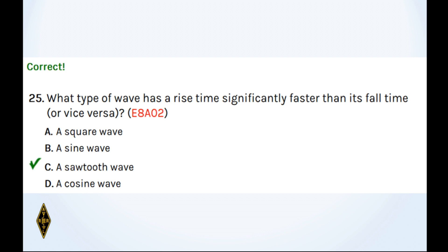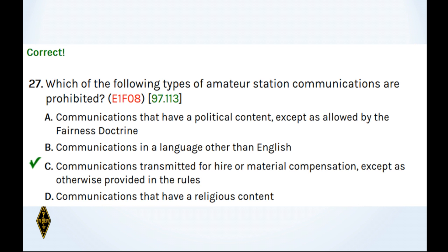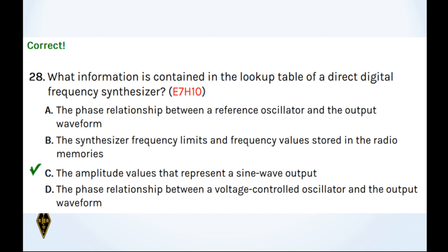And 26, what is the main reason to use a charge controller with solar? Well, it's to prevent the battery from being damaged due to overcharging. And 27, what of the following types of amateur station communications are prohibited? Pecuniary, communications transmitted for hire or material compensation. You can have no pecuniary interest, monetary interest. 28, what information is contained in the lookup table of a DDS or direct digital synthesizer? That's the amplitude values that represent a sine wave. It actually reads the memory, makes it. Reads the memory, makes it. Reads the memory, makes it.